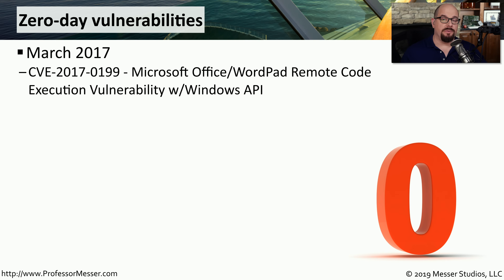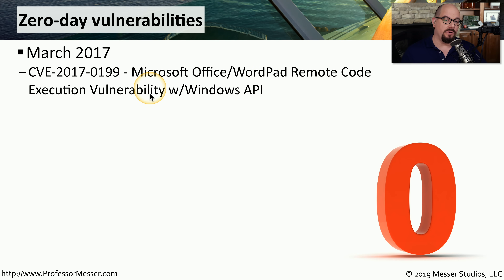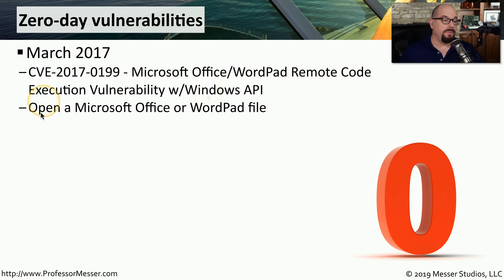An example of a zero-day vulnerability would be one that we found in March of 2017. The CVE is CVE 2017-0199. This is a vulnerability associated with Microsoft Office and also with the application WordPad on Windows systems. It is a remote code execution vulnerability that integrates with the Windows API. You would simply open a Microsoft Office file or a WordPad file, and that was enough for that vulnerability to take effect.